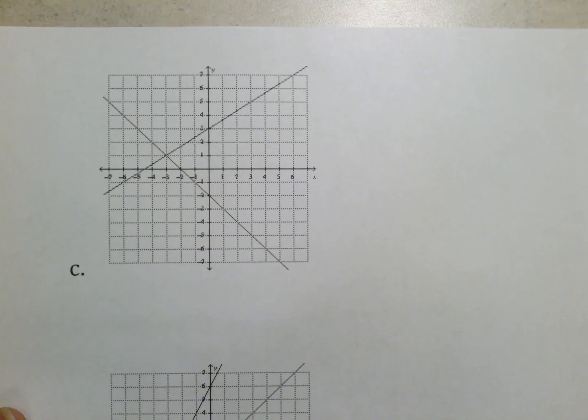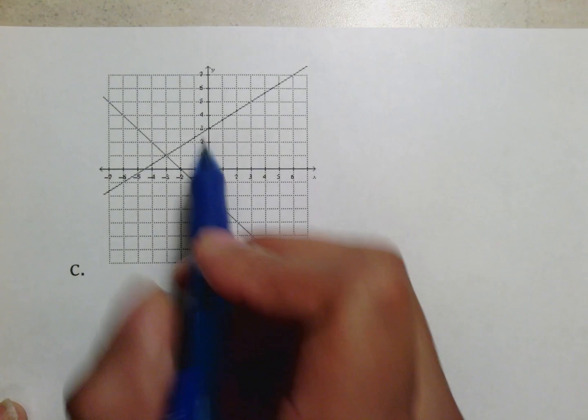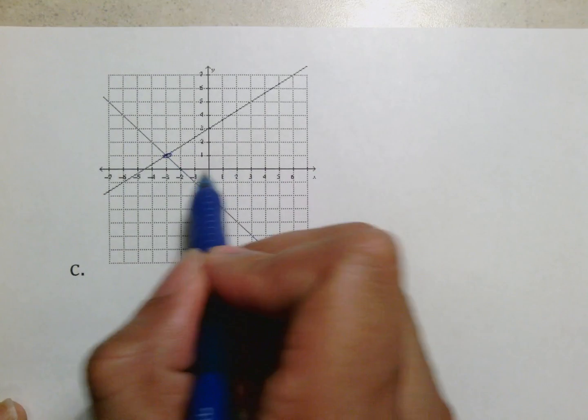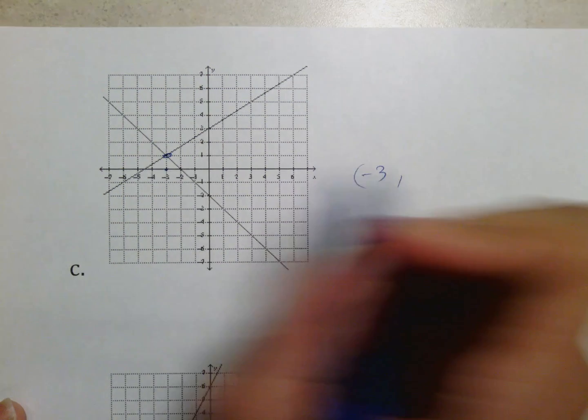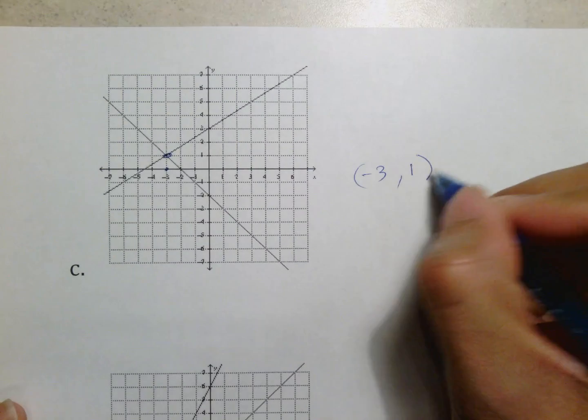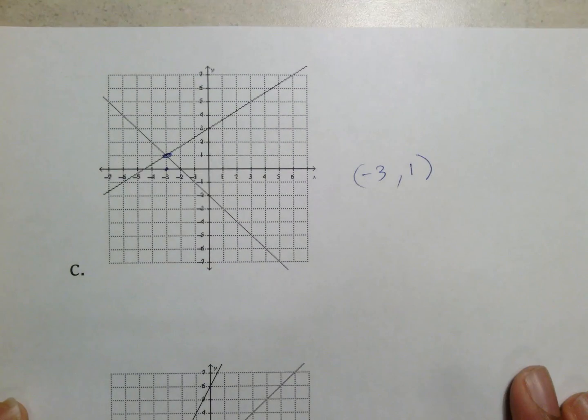Looking at our third example. Again, this is the point where they cross. It is above this number, which is negative 3. That's my first number. And then notice from there I go up 1, which is a positive 1. So that would be the solution that I will put into the computer later on.